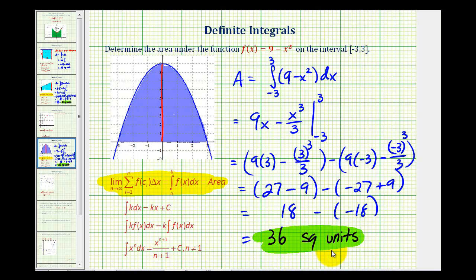Now I think you'll have to admit, this actually is pretty amazing. The area of this shaded region with this curved edge is exactly thirty-six square units, meaning thirty-six one by one squares would fit perfectly inside the shaded region. And we can determine this area in a fairly straightforward process thanks to the fundamental theorem of calculus. We'll take a look at more examples in the next video.